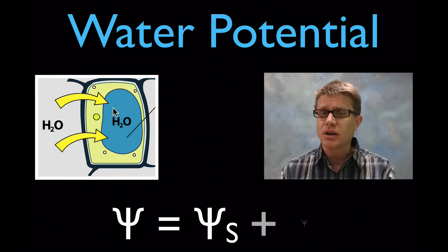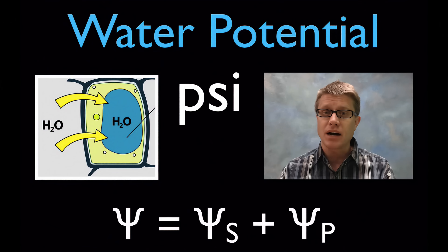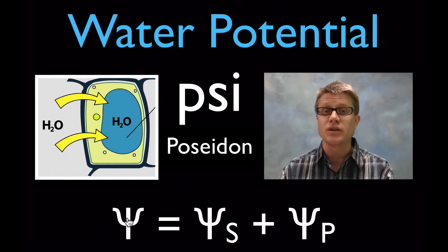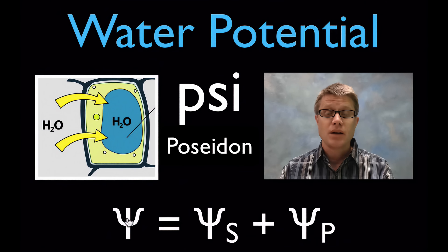We measure it using something called psi or psi. A quick way to remember that is that Poseidon, who was this Greek god of the oceans, carried a trident and it looks a lot like the trident that we used to represent water potential or psi.